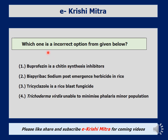Eighth question: which one is an incorrect option from those given? Options include: buprofezin is a chitin synthesis inhibitor; bispyribac sodium is a post-emergence herbicide in rice; tricyclozol is a rice blast fungicide; and Trichoderma harzianum is unable to minimize Cyperus rotundus population. Buprofezin is indeed a novel insecticide particularly suited to soft-bodied insects and is a chitin synthesis inhibitor — that option is correct.